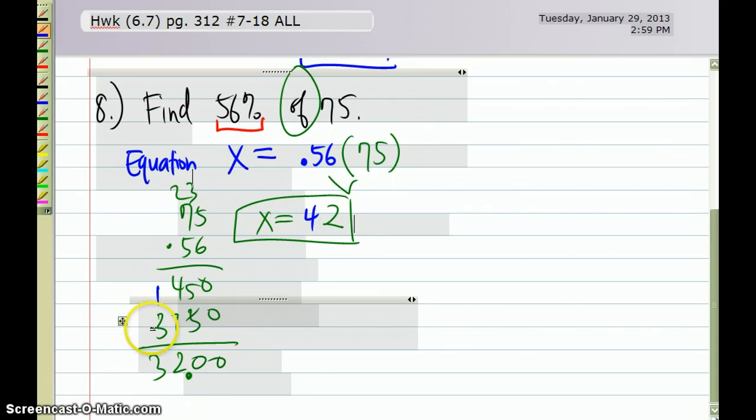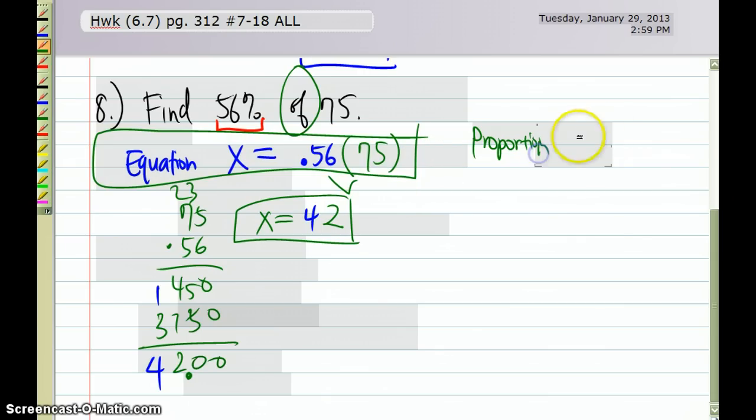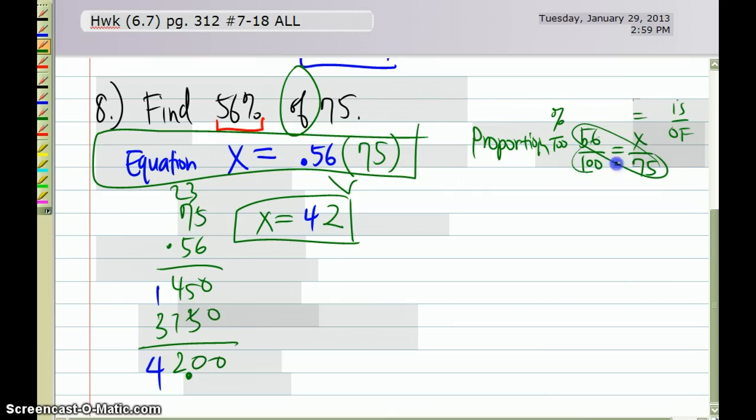I messed up here in my multiplying. I've got to carry the 1, which is 42, and if I want to, I could use the proportion. I did say you need the equation, so this is what I should see, and then an answer. But my proportion would be 56 over 100 equals x over 75. That, again, is your percent over 100, equaling your 'is' over 'of.' And you can choose to solve it that way if you wish to.